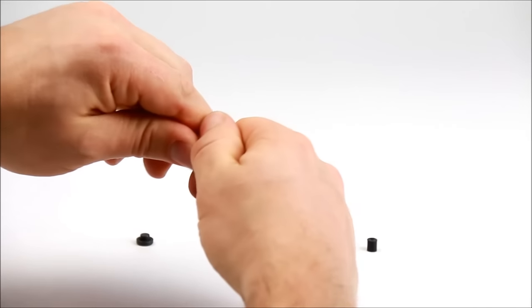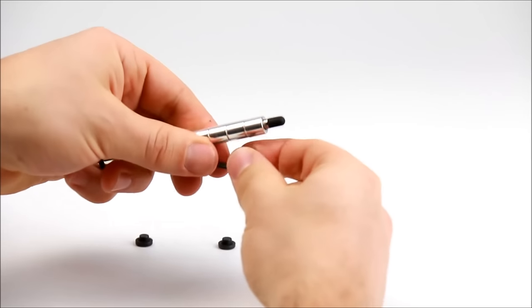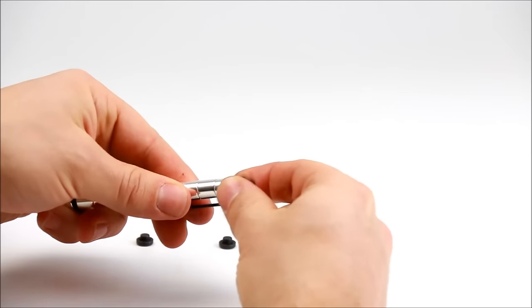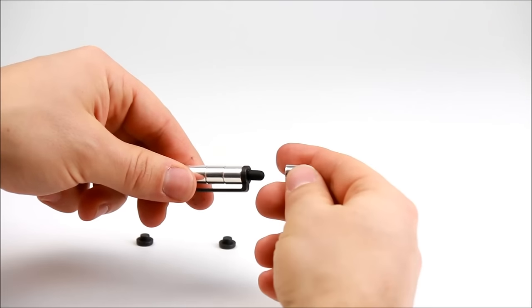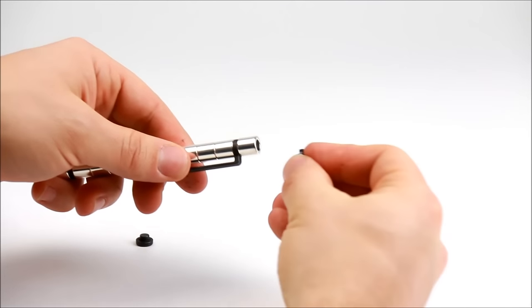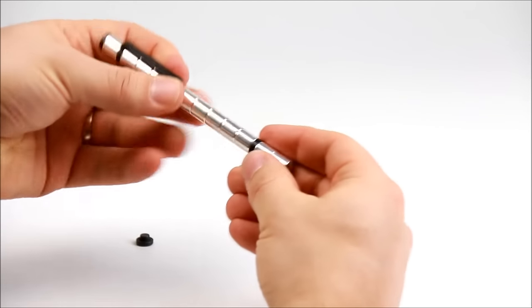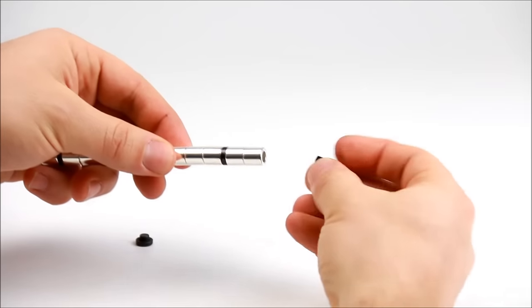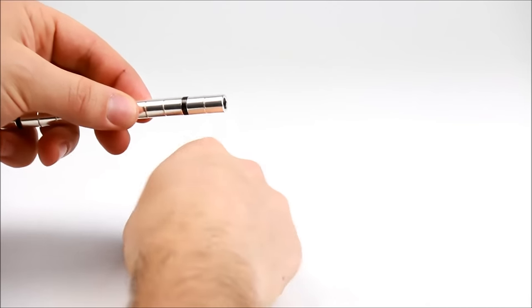Pull off one magnet on the opposite end and attach the clip. Put one magnet back on and cap it. On the other end we will slide in the silicone center and then put the cap on.